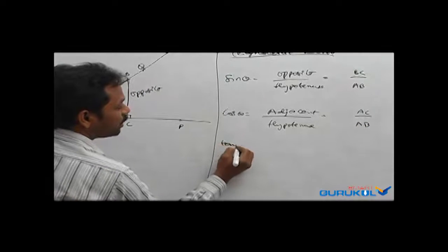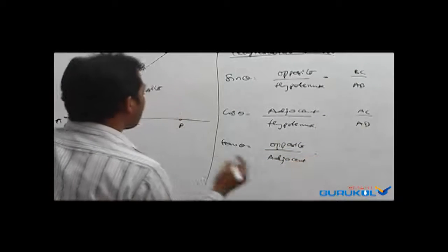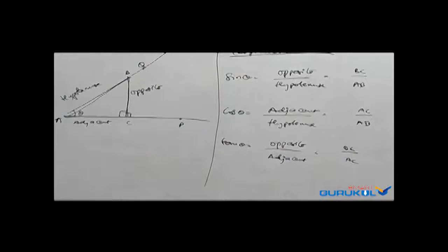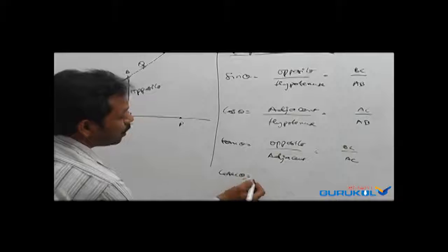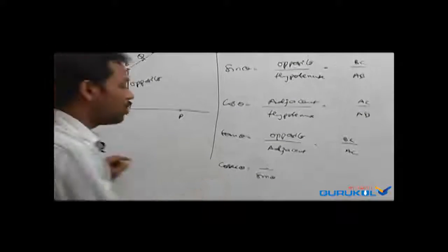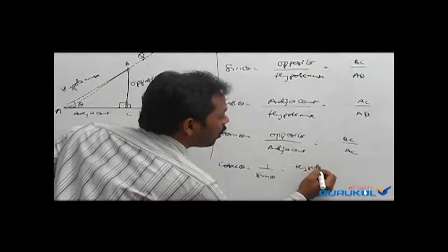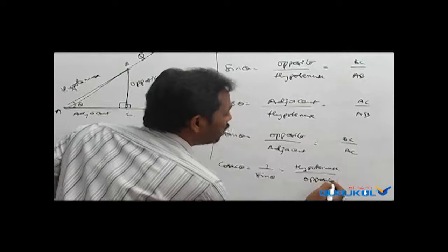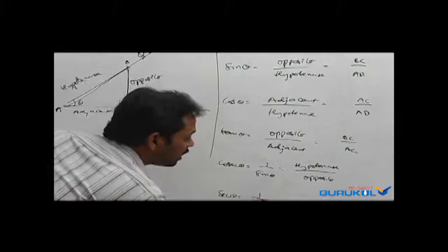Tan theta is nothing but opposite by adjacent. Here, opposite is BC and adjacent is AC, so tan theta equals BC by AC. The fourth ratio is cosec theta. Cosec is the reciprocal of sin theta — since sin theta is opposite by hypotenuse, its reciprocal gives cosec theta as hypotenuse by opposite. Secant theta is the reciprocal of cos theta. Since cos theta is adjacent by hypotenuse, secant theta gives you hypotenuse by adjacent.